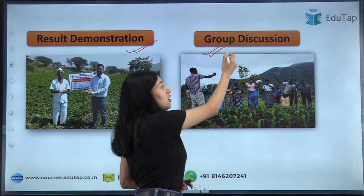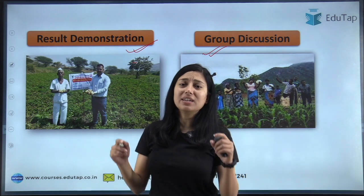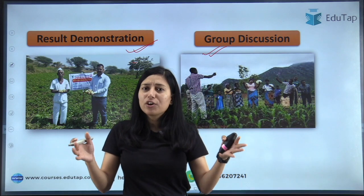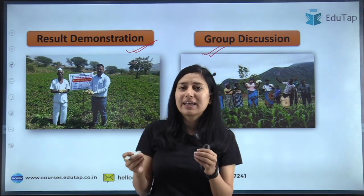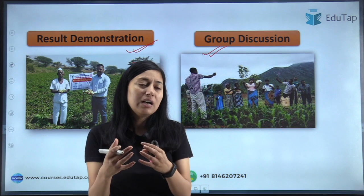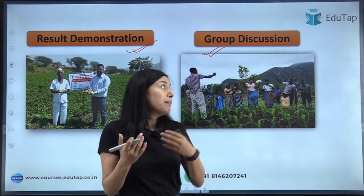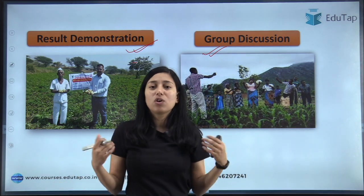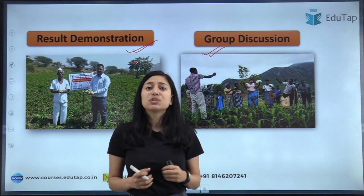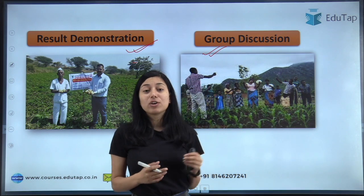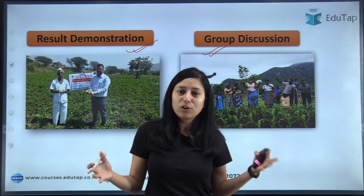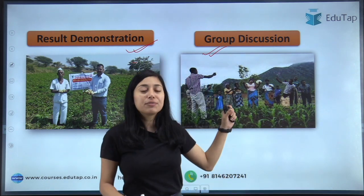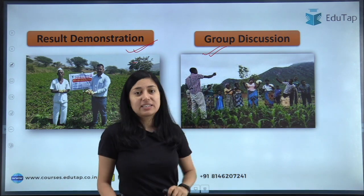Moving on to the next — group discussion. Whenever extension workers visit a farmer or his family, the target audience is very small; only a few persons can be educated through farm and home visits. But through group discussion, a group of 20 to 25 farmers can be called together by extension workers and educated at the same time. So here the target audience becomes bigger — a larger group can be educated through group discussion.